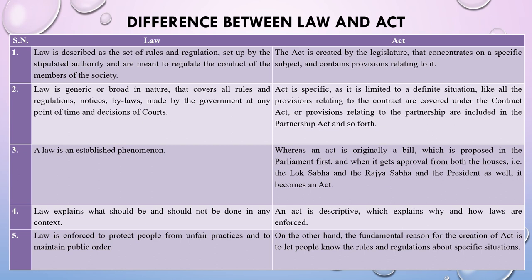Third, a law is an established phenomenon, whereas an act is originally a bill which is proposed in the parliament first, and when it gets approval from both houses — that is the Lok Sabha or lower house and the Rajya Sabha or upper house — and the president as well, it becomes an act. Fourth, law explains what should and should not be done in any context. On the other hand, an act is descriptive, explaining why and how laws are enforced.